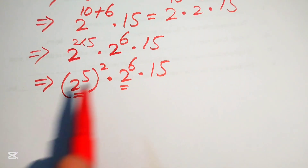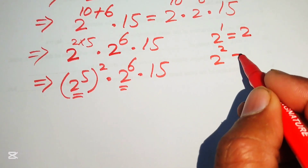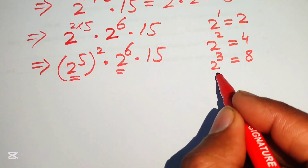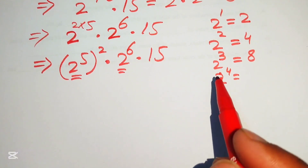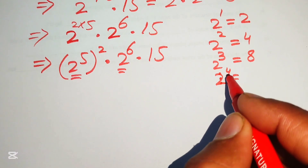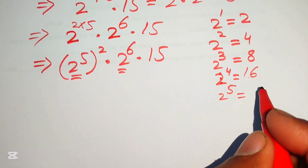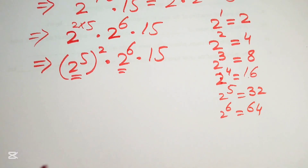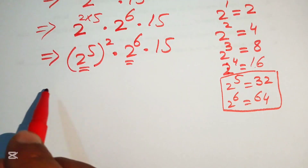We build up the powers of 2: 2^1 = 2, 2^2 = 4, 2^3 = 8, 2^4 = 16. To find the next power, multiply the previous term by 2: 2^4 = 16, 2^5 = 16 times 2 = 32, and 2^6 = 32 times 2 = 64. We need these two values for the next step.